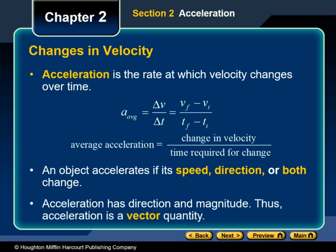Many bullet trains have a top speed of about 300 km per hour. Because the train stops to load and unload passengers, it does not always travel at that top speed. For some of the time the train is in motion, its velocity is either increasing or decreasing. It loses speed as it slows down to stop and gains speed as it pulls away and heads for the next station.